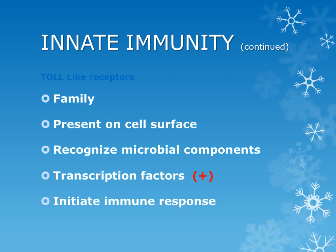When we talk about the Toll-like receptor, this is a very important family of the pattern recognition receptor. This family includes 10 receptors. These Toll-like receptors are present on the cell surface and they recognize various microbial components. When these microbial components are recognized, they enhance the synthesis of various pro-inflammatory cytokines.